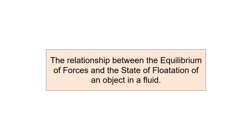In this part, we will look at the relationship between the equilibrium of force and the state of flotation of an object in a fluid. When an object is submerged in water, there are two forces acting on it: the weight of the object due to gravity and the buoyant force. We want to know — if the object is floating, what happens to the equilibrium of forces? And if it is not floating, either rising upward or sinking downward, what happens to the buoyant force and weight?